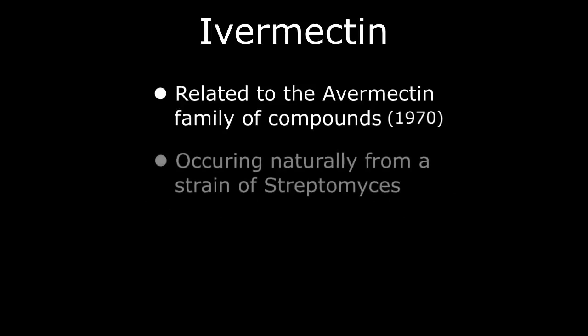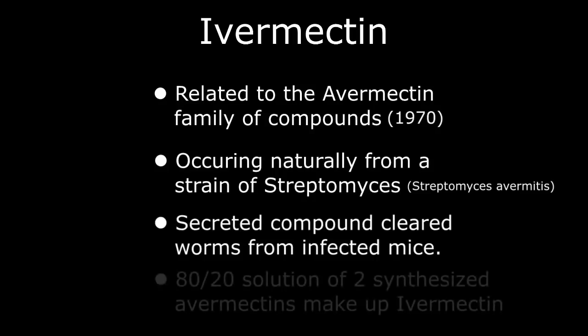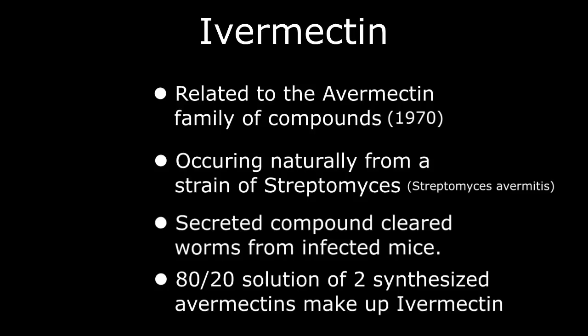Occurring naturally from a strain of Streptomyces bacteria, subsequently named Streptomyces avermitilis, the isolated compound secreted by the bacterium was found to clear worms from infected mice. Synthesized and modified forms of Avermectin were developed to improve pharmaceutical properties, with an 80-20% combination of two of these synthesized compounds generically named Ivermectin and introduced in 1981.